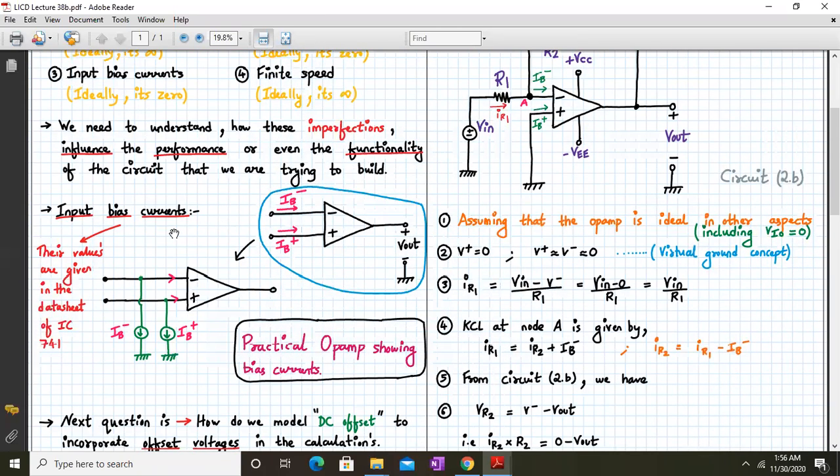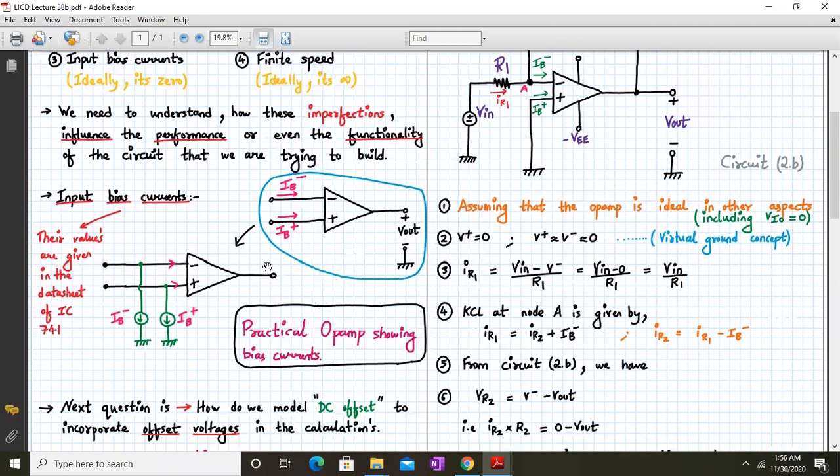So what are the input bias currents? These values are specified in the data sheet and they have some value in nanoamperes which are flowing into the op-amp terminals. So this Ib plus and Ib minus can be represented or modeled by constant currents which are leaving these terminals.